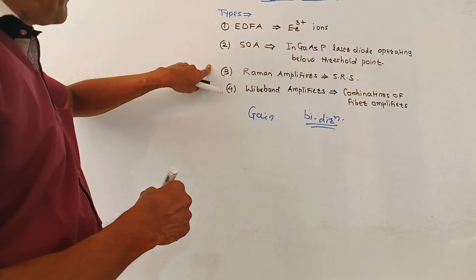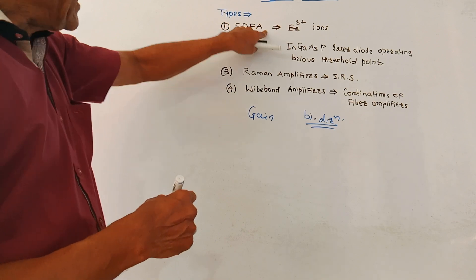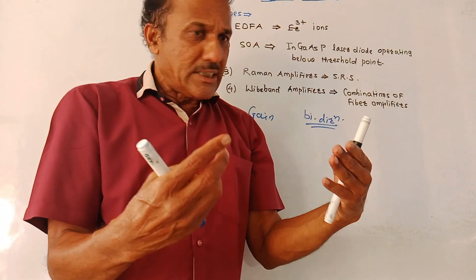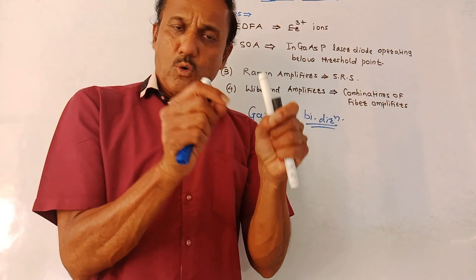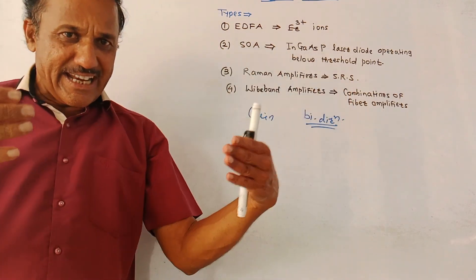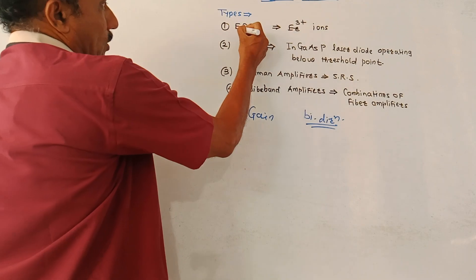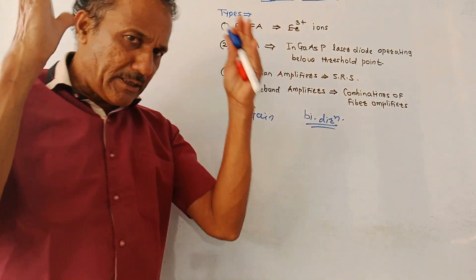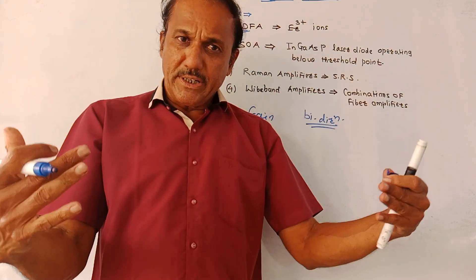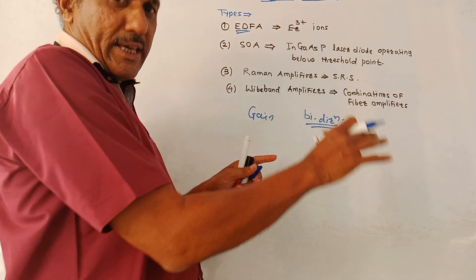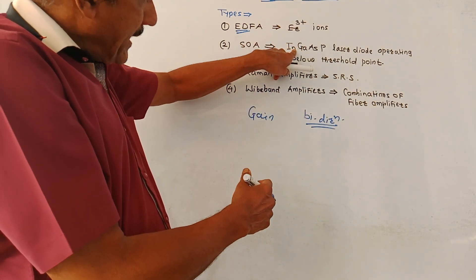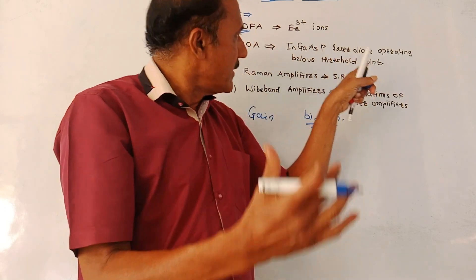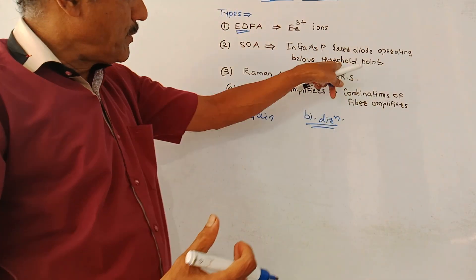There are broadly four types of optical amplifiers. First is EDFA, that is erbium doped fiber amplifier. This amplifier contains erbium ions (Er³⁺) inside the core layer of the fiber optic cable, which provide the gain and accordingly amplification takes place. Next is SOA, the semiconductor optical amplifier, which makes use of semiconductor properties for amplification. The SOA is generally an indium gallium arsenide phosphate (InGaAsP) semiconductor laser diode operating below the threshold point.